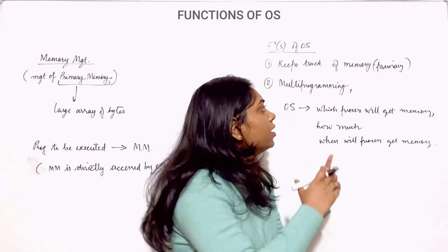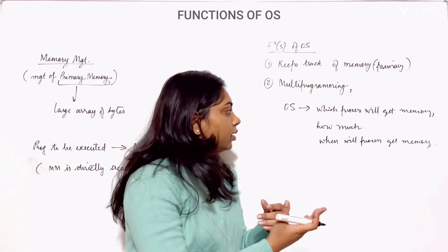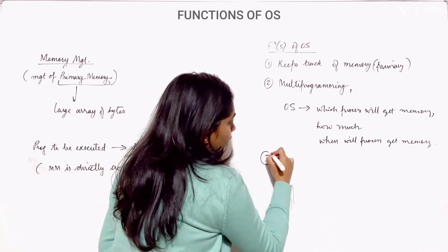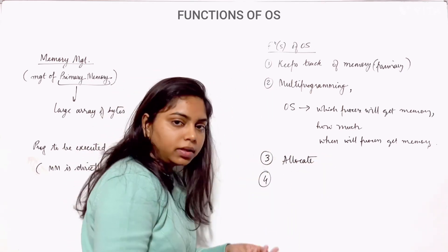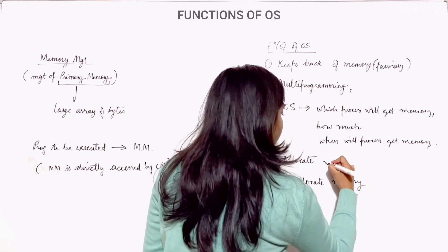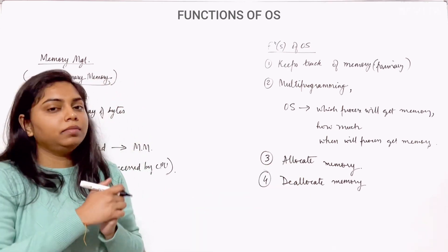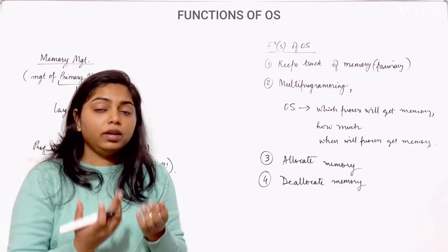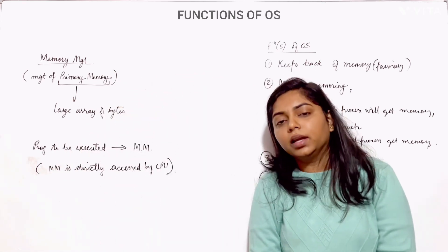To revise: the first function is keeping track of primary memory — which part is in use and which is not. Second, in multi-programming, OS decides which process gets memory, when, and how much. Third, if a process requests memory, OS will allocate memory to that process. Fourth, if a process is terminated, OS will deallocate the memory. These are the four functions of OS in case of memory management.